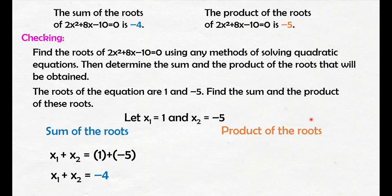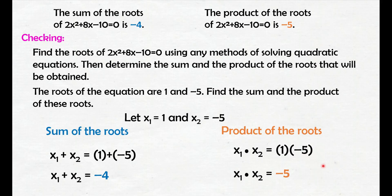And then for the product of the roots, we multiply the two given roots: 1 times negative 5 is negative 5. As we can see, the answer matches what we got in our first solution for the product of the roots — negative 5. So that means our answer is correct.